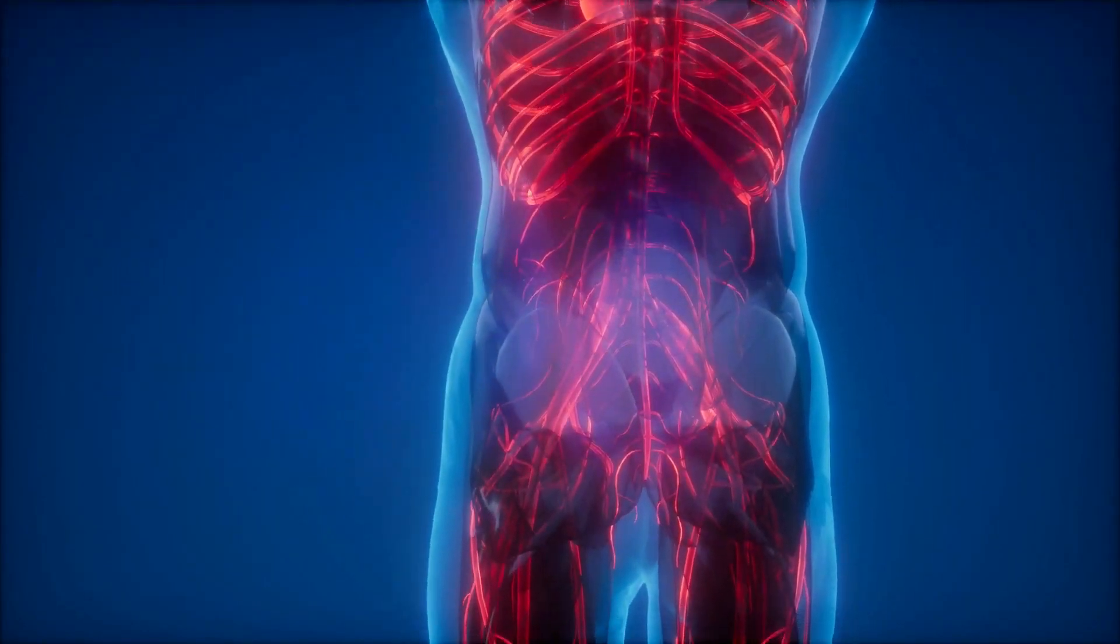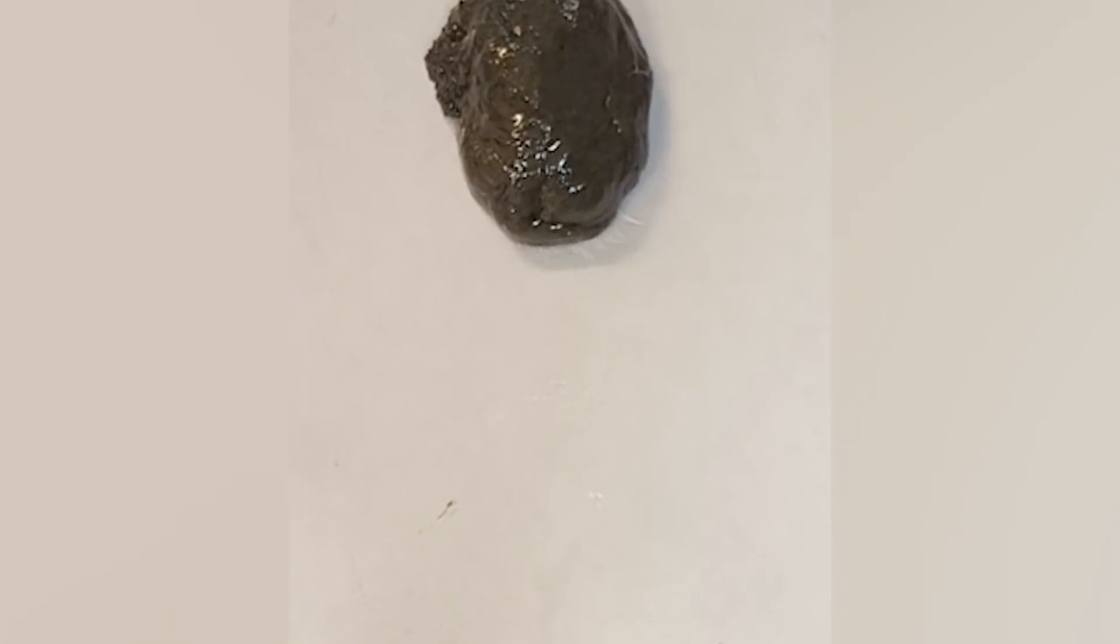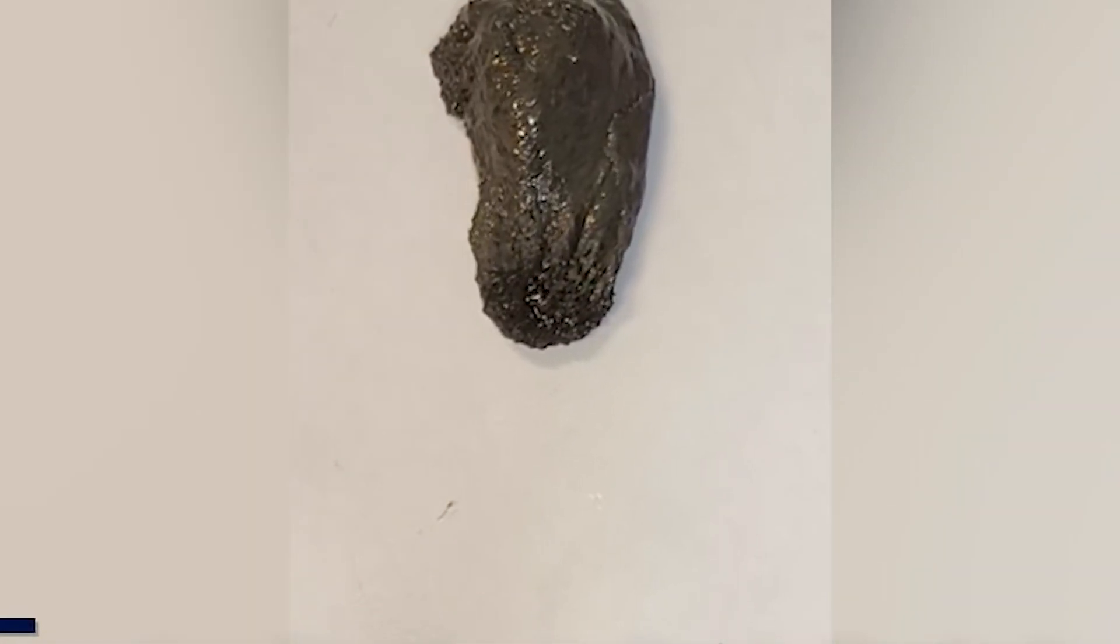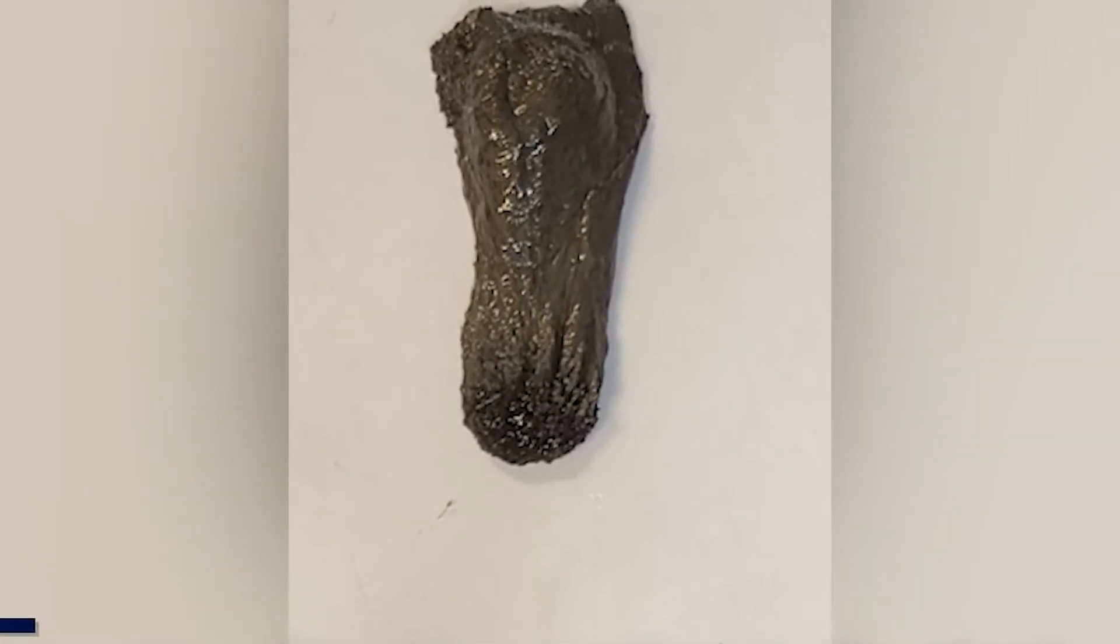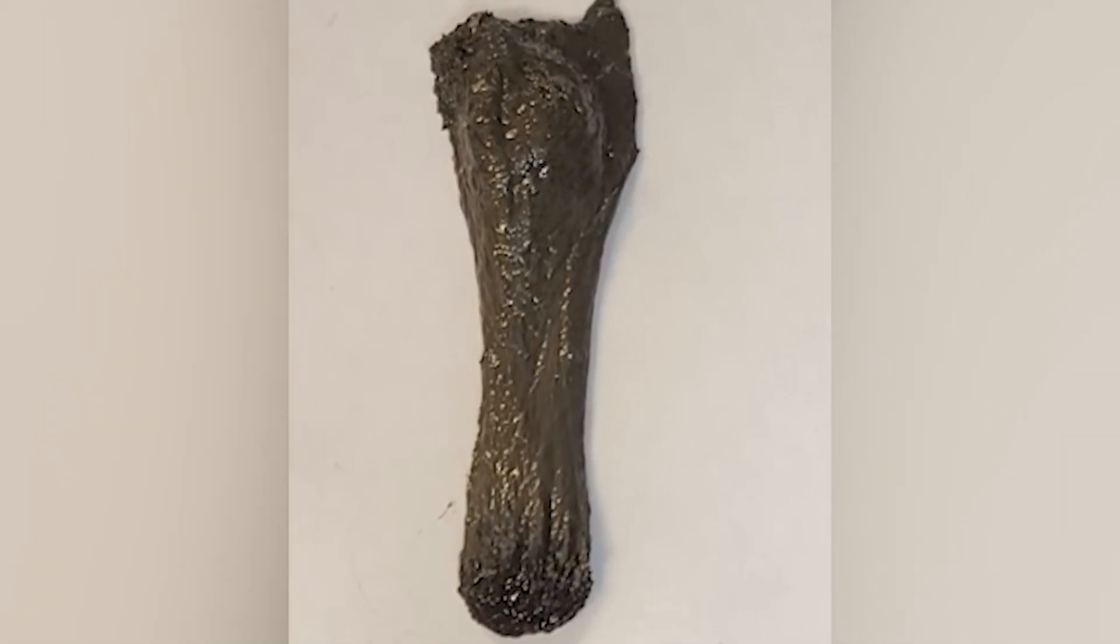Neodymium magnetic particles, borax, and polyvinyl alcohol make up the slime. As a result, a dark brown glob that responds well to a magnetic field is formed.